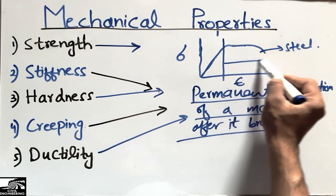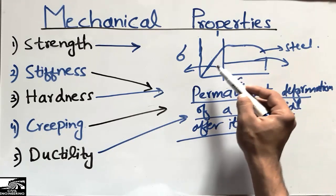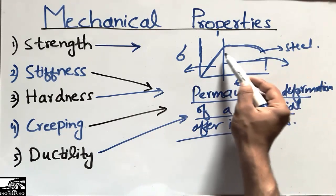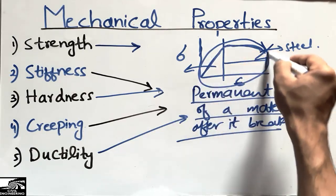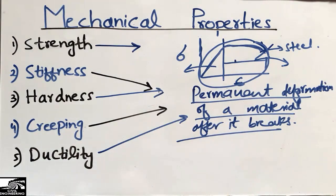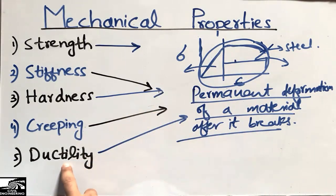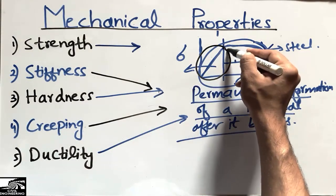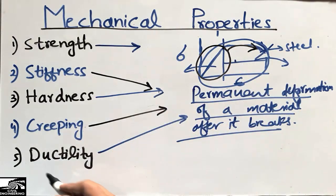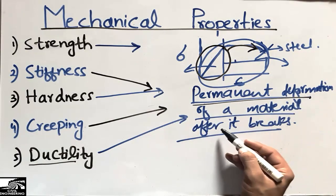From this point onwards it is elastic deformation, and at this point it becomes plastic deformation. The permanent deformation of a material after it breaks — that property we call ductility. The more permanent deformation that occurs, the more ductile the material is. The inverse is the brittle material — a brittle material fails without going through plastic deformation, while a ductile material undergoes permanent deformation before breaking.